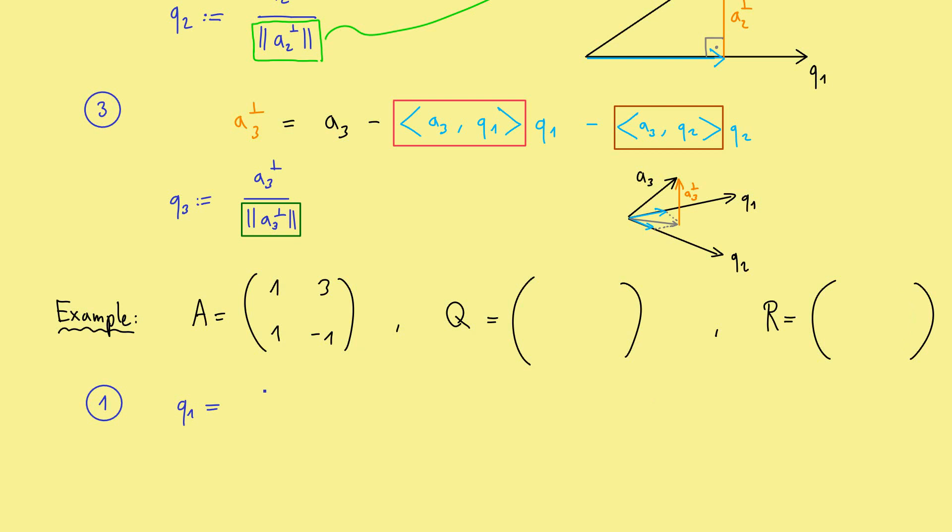First, we calculate Q1, which is A1 divided by the norm of A1. So, we can rewrite that as 1 divided, and the norm is 1 squared plus 1 squared. And here's the vector of 1, 1. And this is obviously just 1 divided by the square root of 2, and 1, 1.